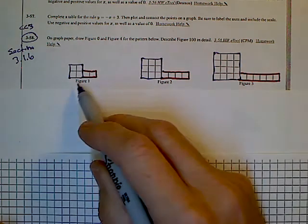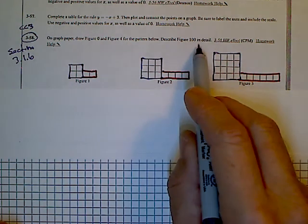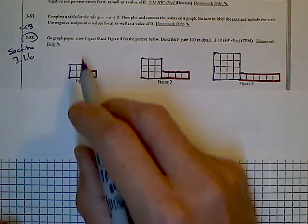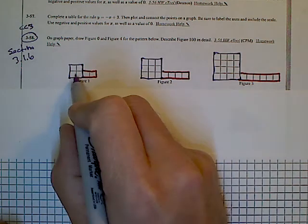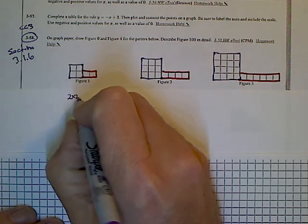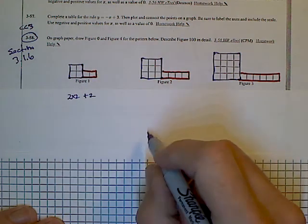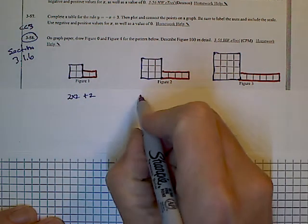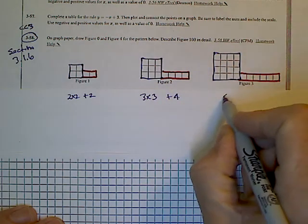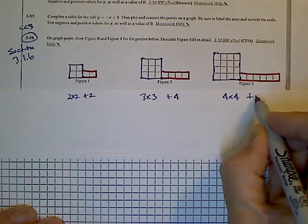So that'll help when I think about what my growth is for my fourth figure, as well as my zero, my hundredth figure. And then going backwards for the zero figure, it might give me a little bit of sense of what that's going to look like. So if I look at my figure one, my figure one is the square is a two by two. And then it's got this additional two pieces, this additional row of two. And then this would be a three by three with an additional row of four. And this would be a four by four with an additional one, two, three, four, five, six, row of six.